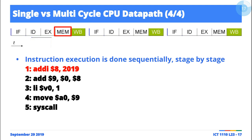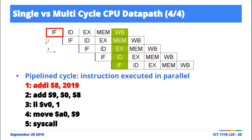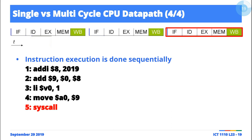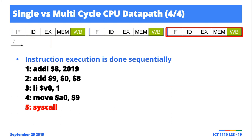To really see the advantage of the pipeline data path, you need to think beyond one instruction. By cycle 10 in the pipeline design, all five instructions would be done — 1, 2, 3, 4, 5 — finished. But in the single-cycle data path, by cycle 10 you'd have only executed two instructions. That is the advantage — do you understand this? If this makes sense, we can transition to the good stuff.